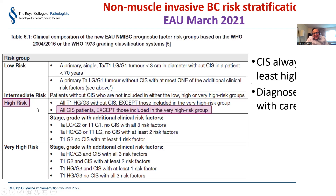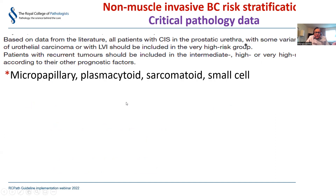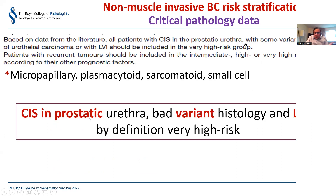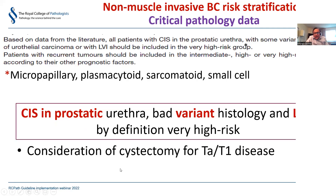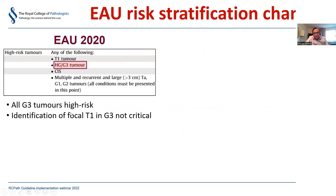CIS is something that you should diagnose with care. Other critical pathology data in non-muscle invasive bladder cancer are CIS in the prostatic urethra, bad variant histology, and LVSI - because these are by definition very high risk and indicate consideration for cystectomy even for Ta and T1 disease. You have to be certain before diagnosing these, because the patient may end up with a cystectomy.